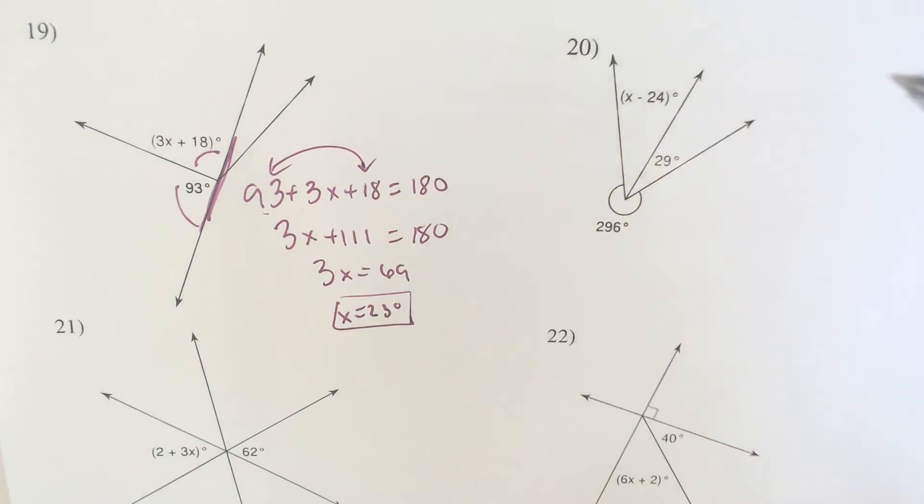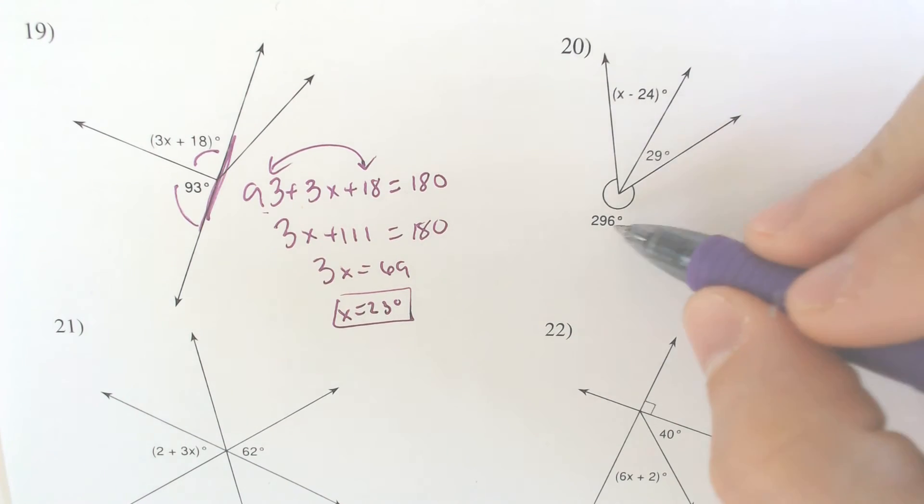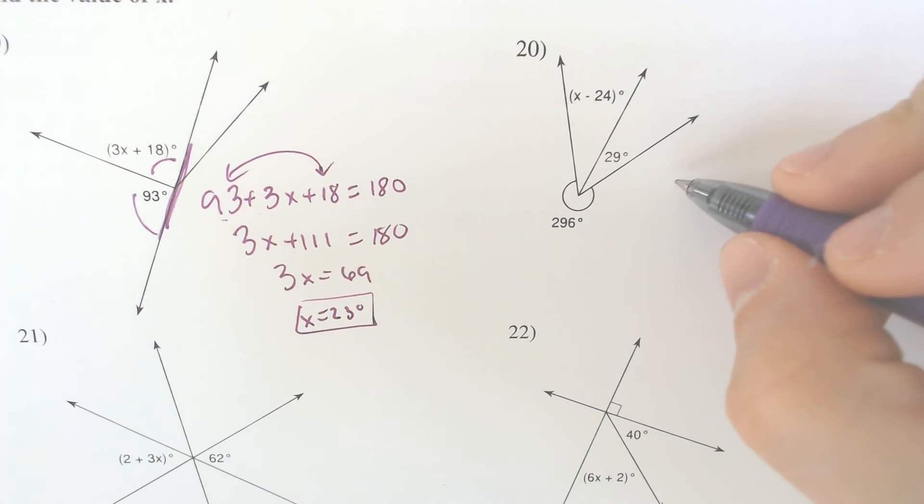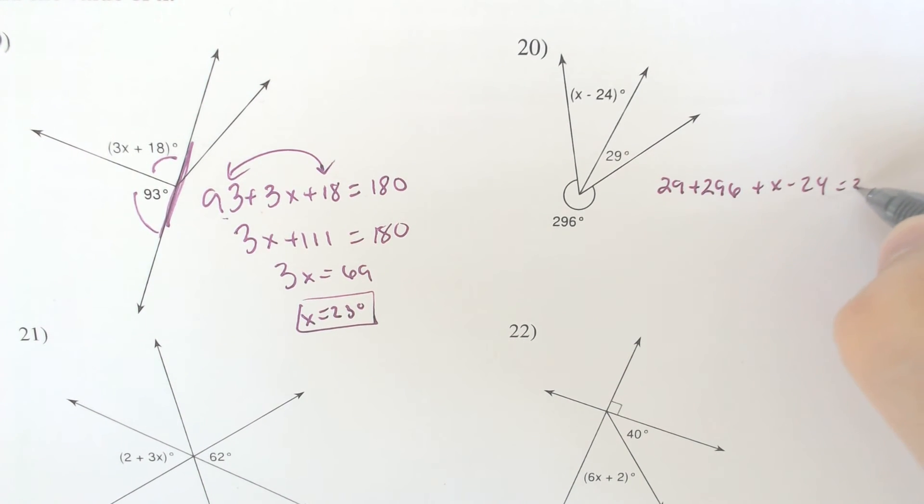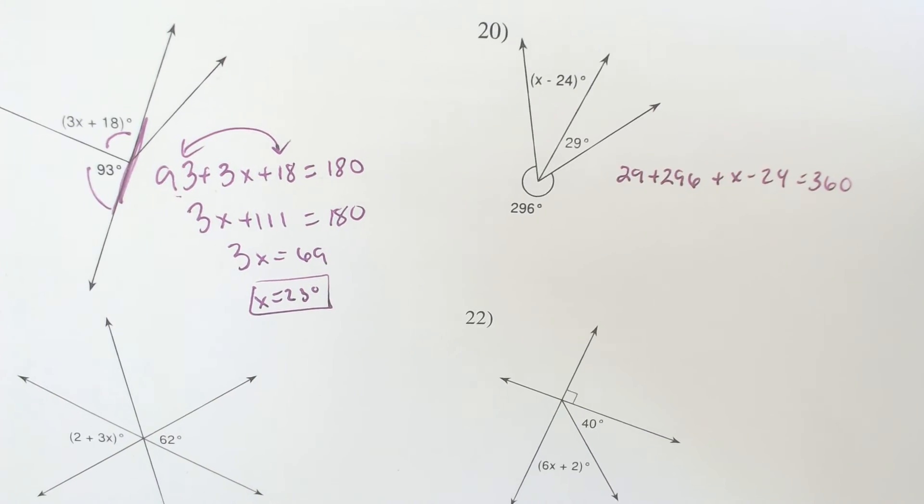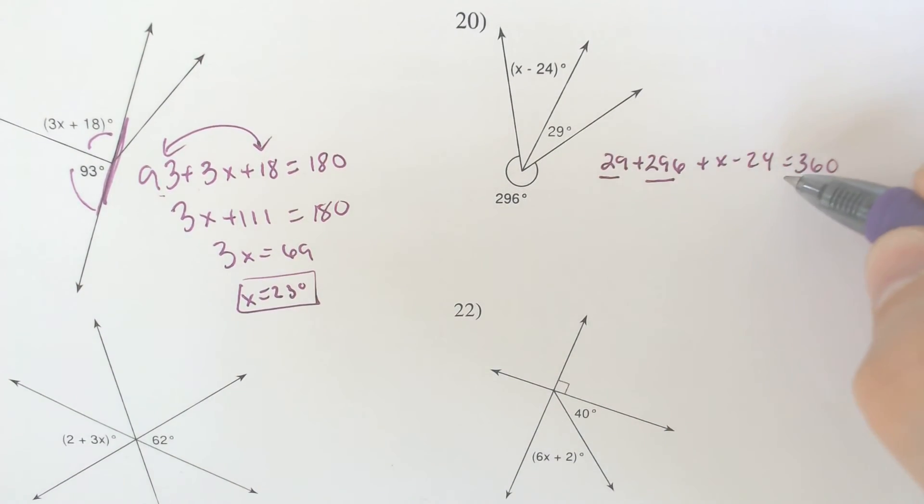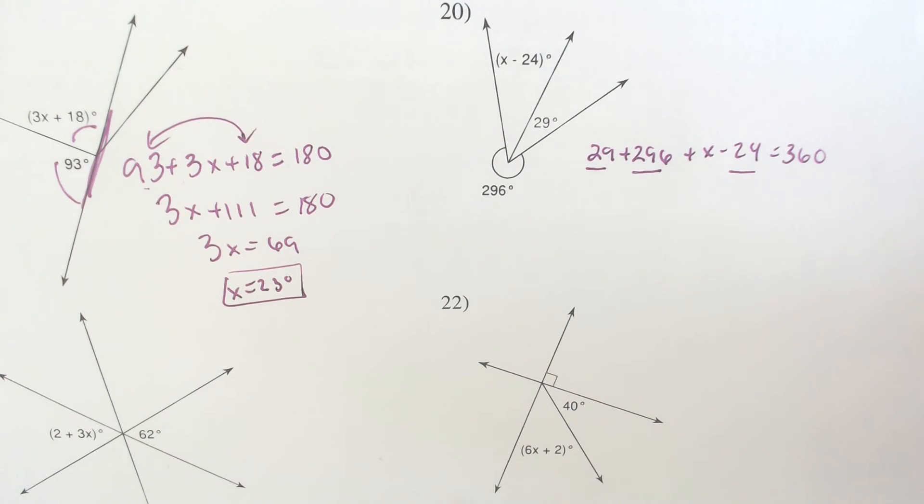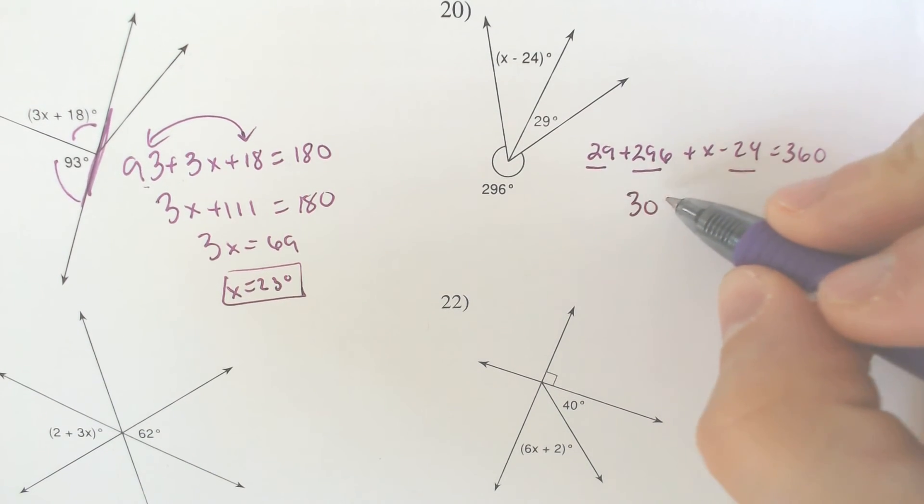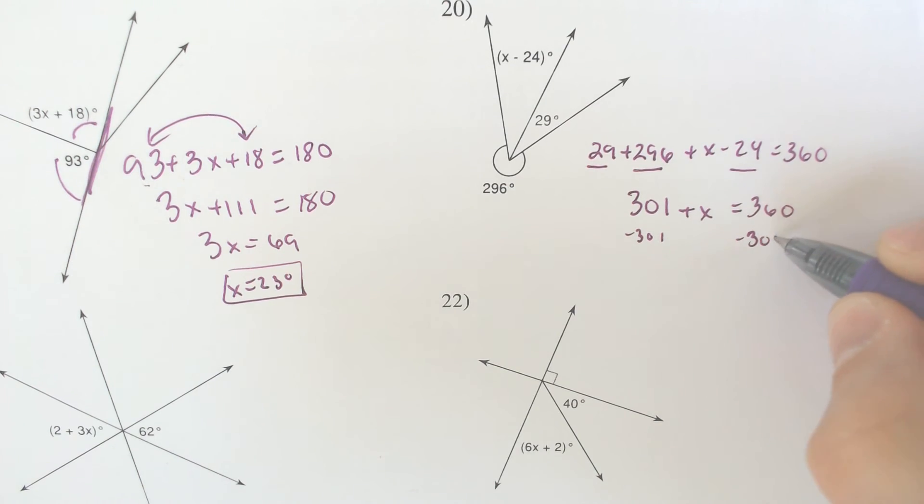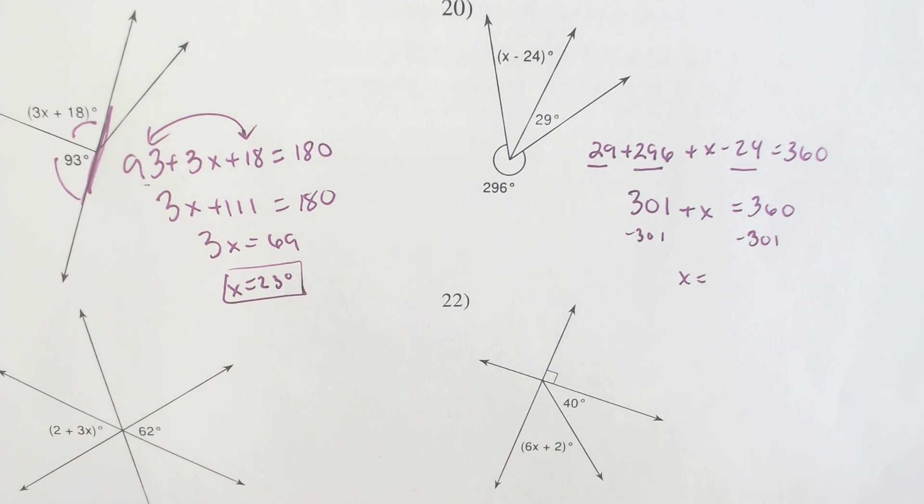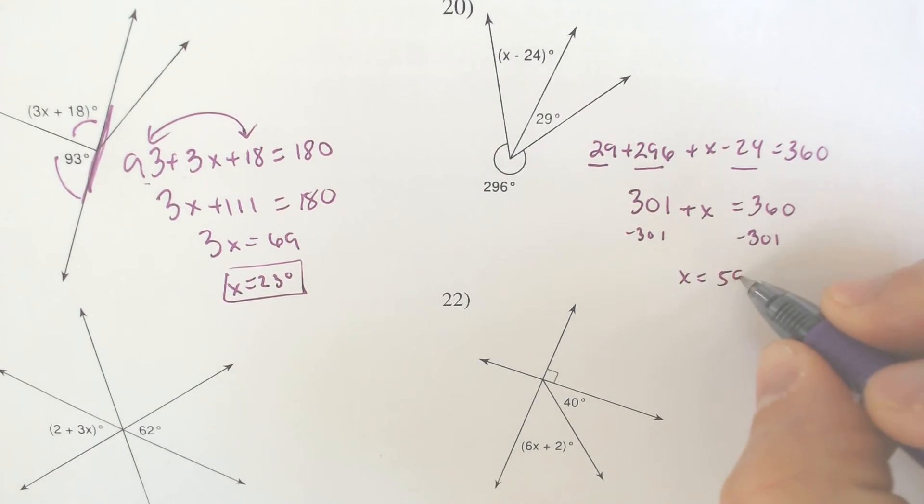On number 20, they don't add to 90. This is not a 90 degree angle. They would all three have to add to 360. So we would have 29 and 296 and x minus 24, all adding to 360 degrees. Combine any and all like terms. We got 296, we got 29, and we got negative 24, not positive 24. So we combine all three of those things together and you would end up with 301 plus x is equal to 360 degrees. Subtract the 301 from both sides. x would equal 360 minus 301, which is 59 degrees.